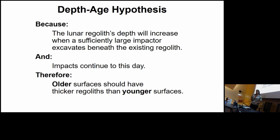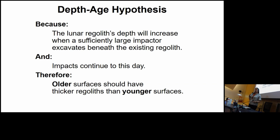Because of this, the lunar regolith gets deeper as impacts excavate beneath the existing regolith. We know that impacts are occurring to this very day. The conclusion is what I have started calling the depth-age hypothesis: older surfaces should have thicker regoliths than younger surfaces.